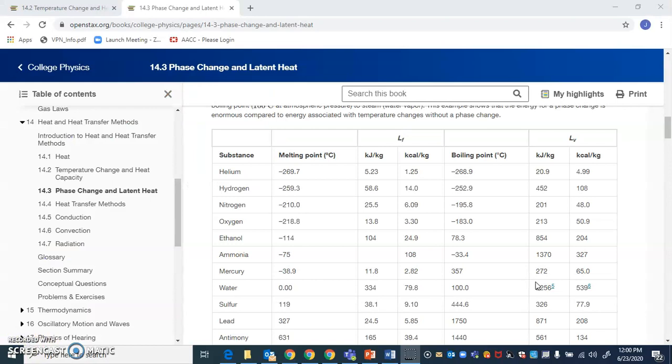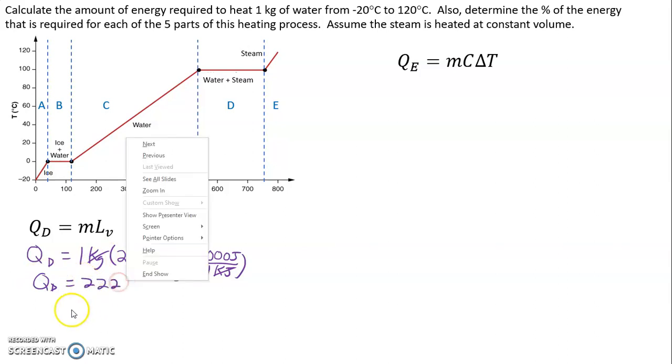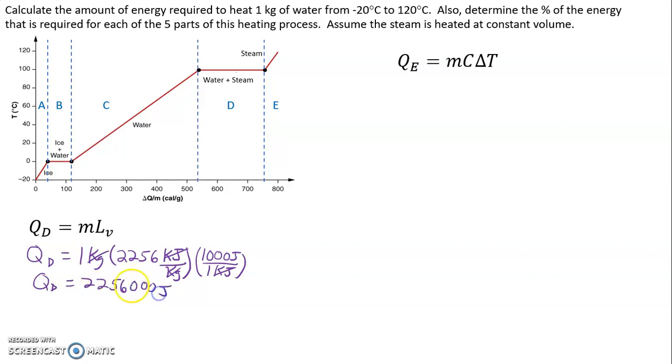Now we're looking at the latent heat of vaporization for water, 2,256 kilojoules per kilogram. Just like before we're going to take the number in kilojoules per kilogram and convert it to joules per kilogram. Kilojoules cancel, kilograms cancel, we're left with the value of 2,256,000 joules. That's a huge number.